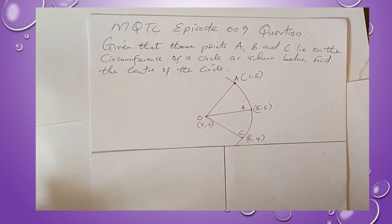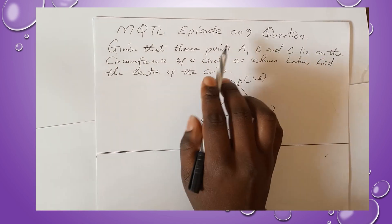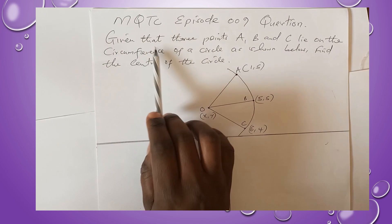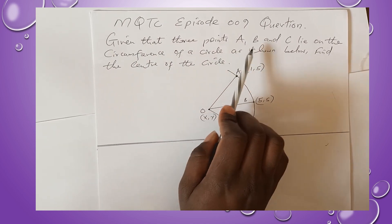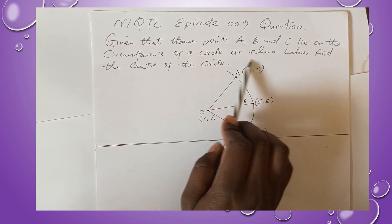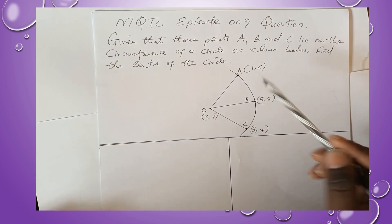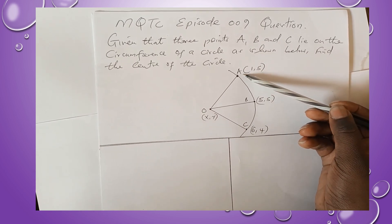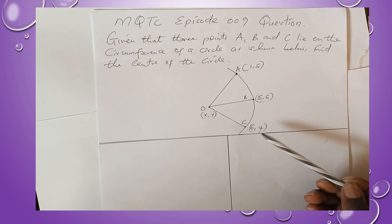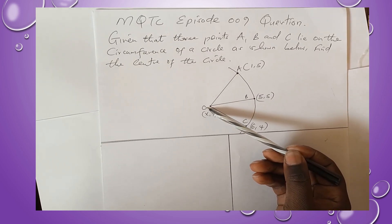Welcome. Today we are giving you the solution for MQTC episode 009. The question was: given that the three points A, B, and C lie on the circumference of a circle as shown below, find the center of the circle. The points are A(1,5), B(5,5), C(6,4), and the center O is here as shown.